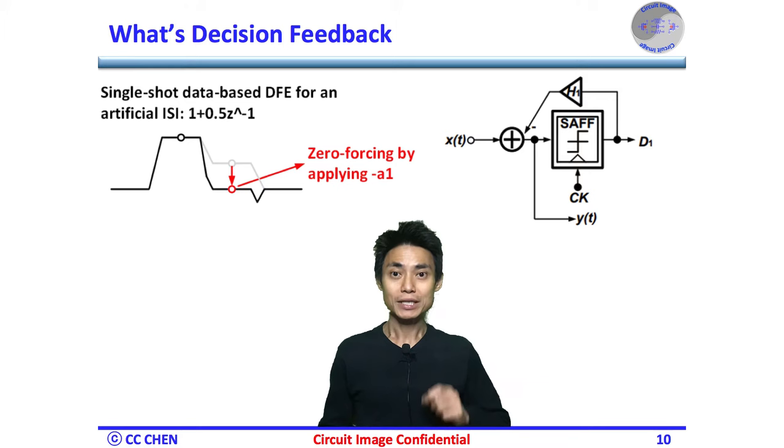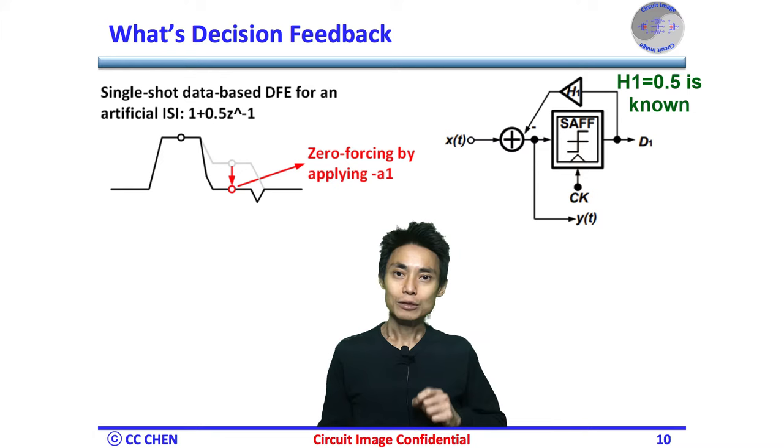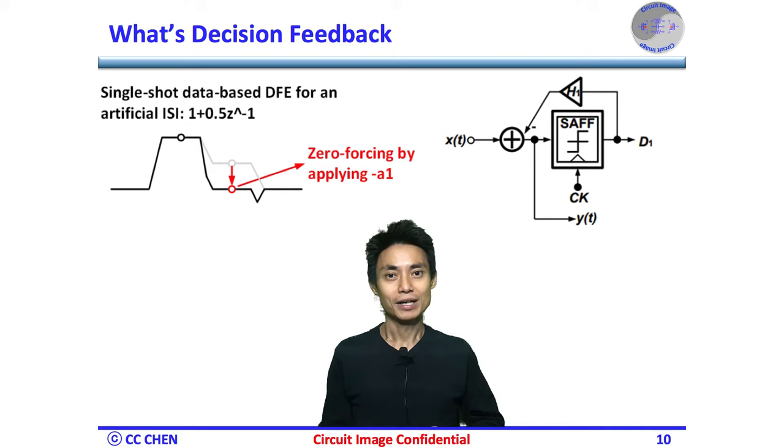At this point, you may have more idea why we call it decision feedback equalizer DFE. As you can see from the block diagram, if the H1's value 0.5 was somehow determined, we can start to sample the aggregate input X and make a quantized decision by the sampler, which is the output D1 here.